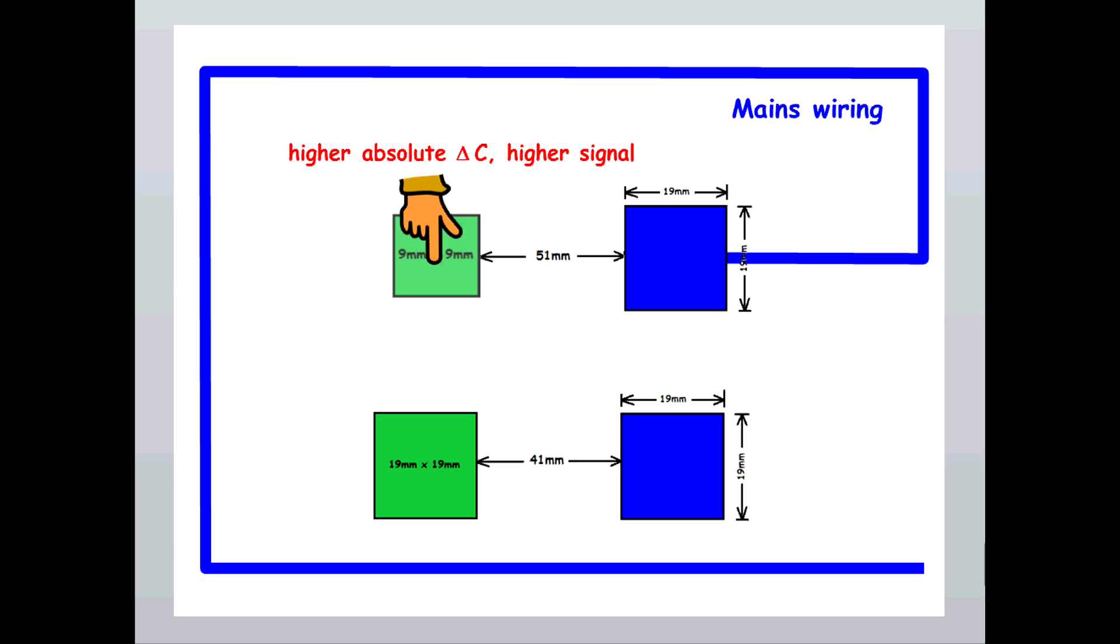The touch antenna, because of its relatively small area, will get all the sensitivity. The mains wire, because of its relatively big coupling area, will become insensitive.